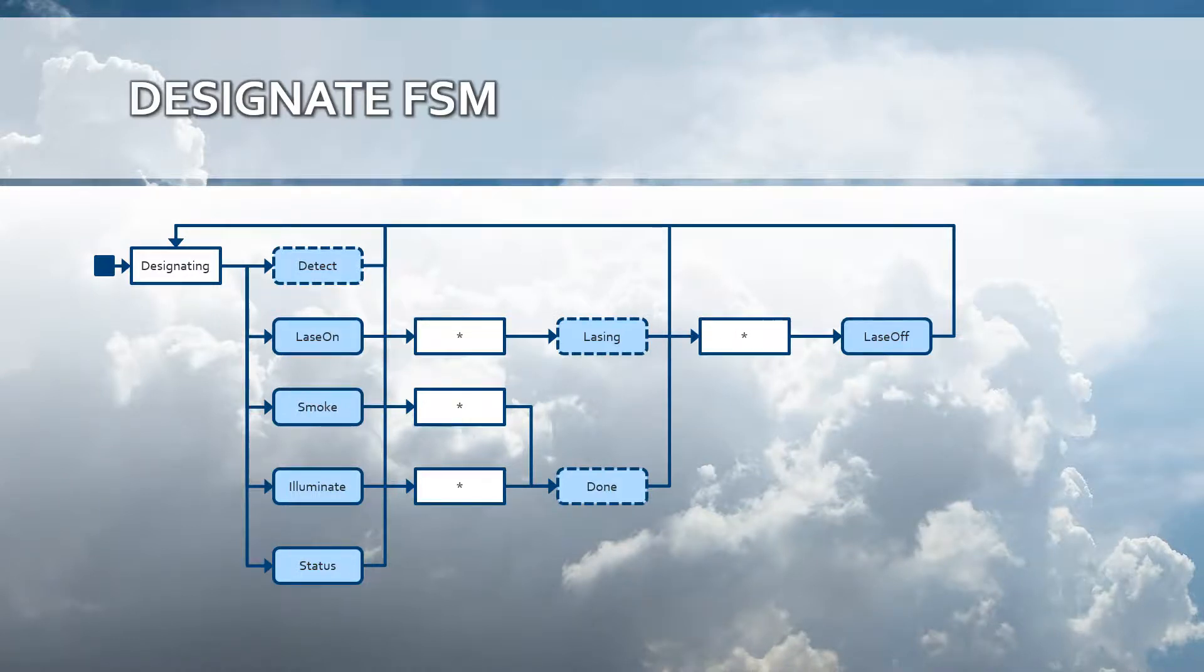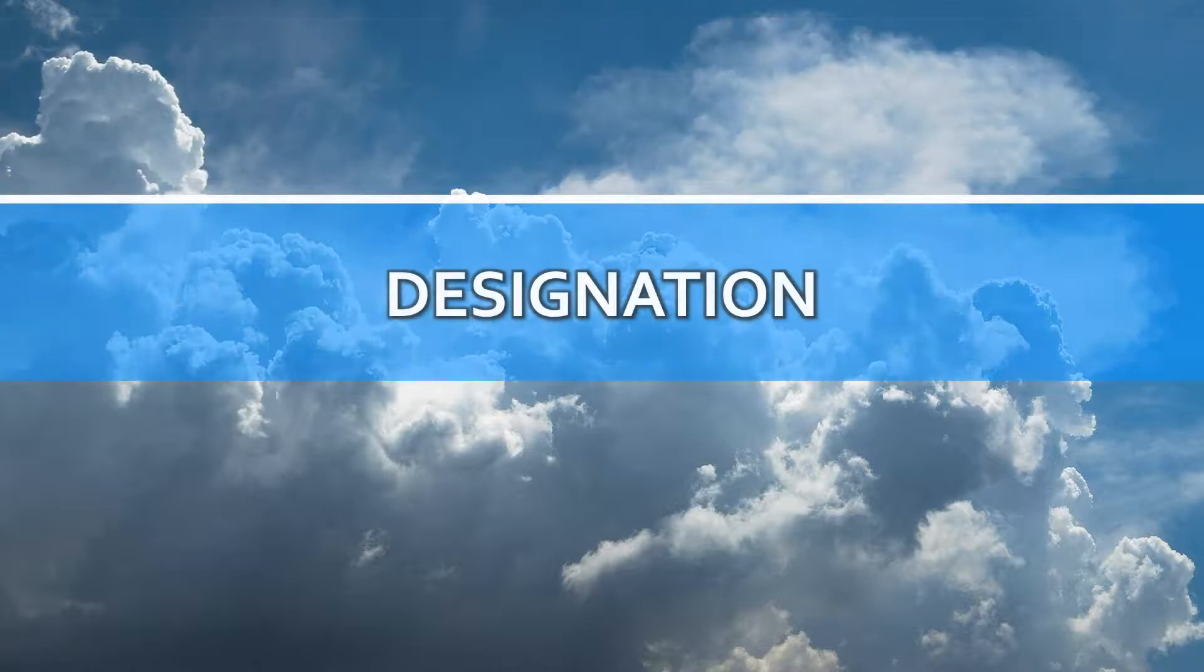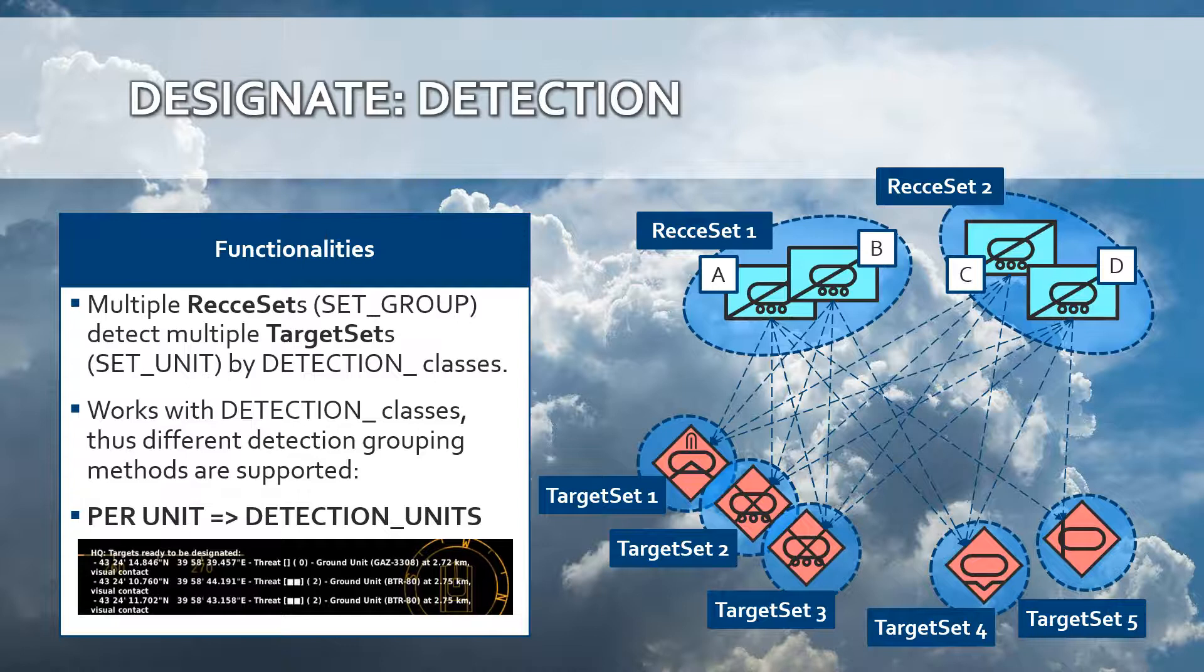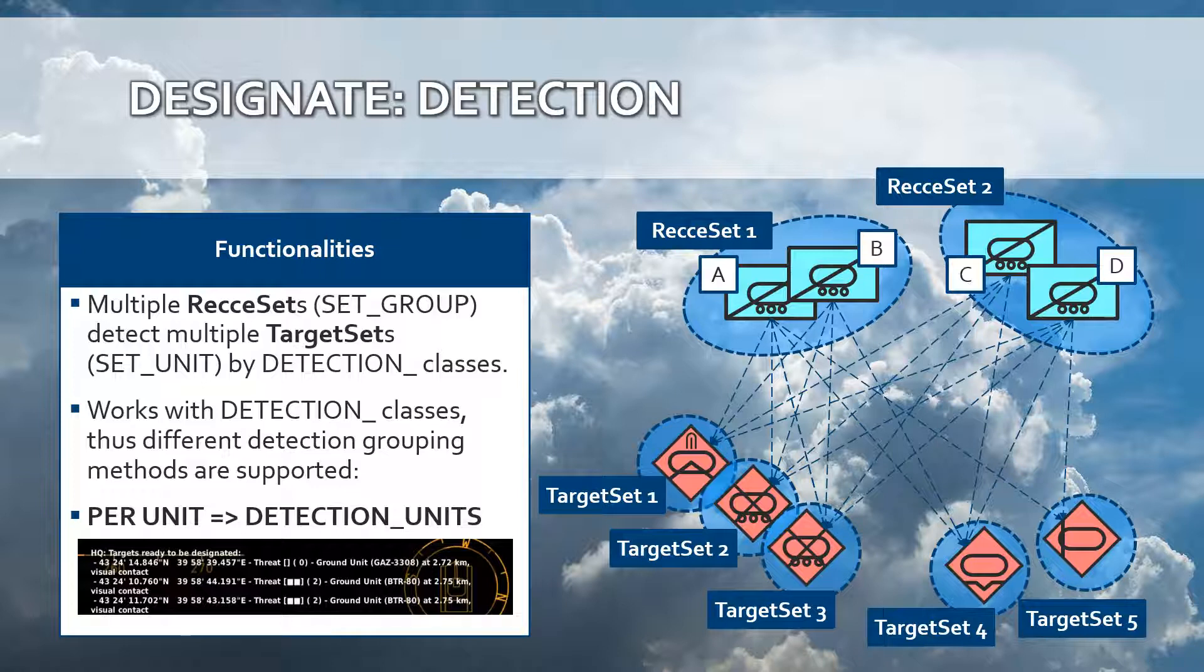What is designation really? Designation is detection as a first step. Each detection class will group the detected targets in different ways. The DetectionUnits class will group the detected targets per unit, so basically there is no grouping. Multiple target sets will be created per unit that has been detected. This is the simplest detection grouping method available within the Moose framework.